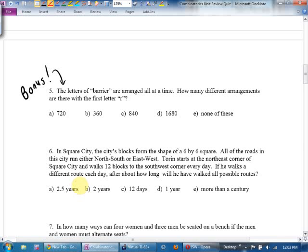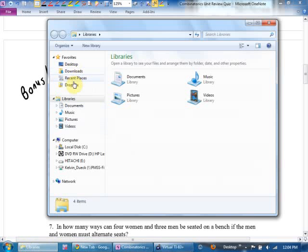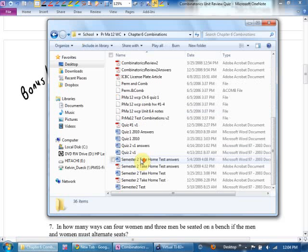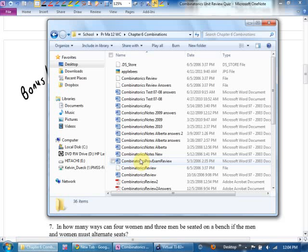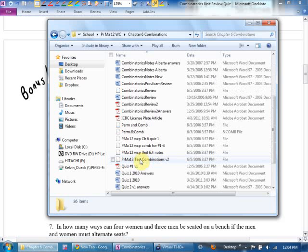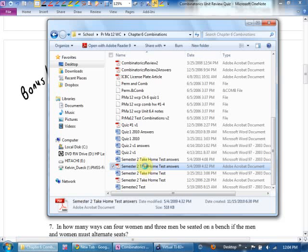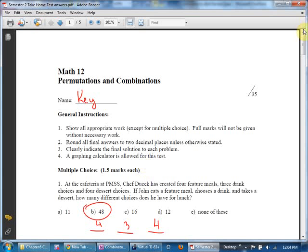In fact, in complete honesty, I think that's a lousy cop-out of an answer. By the way, also on the provincial, it's four options, not five. Bonus. The letters of barrier are arranged all at a time. How many different arrangements are there with the first letter R? Why did I write bonus? I wrote bonus because I was, I made a mistake, I think, the last time I did this. Give me one second here. Desktop. I'm actually going to look at my old answer key to double check here.